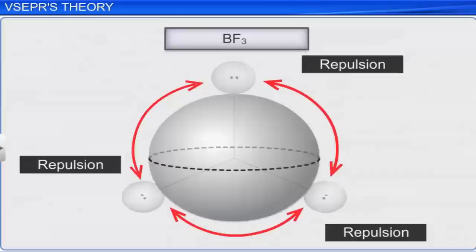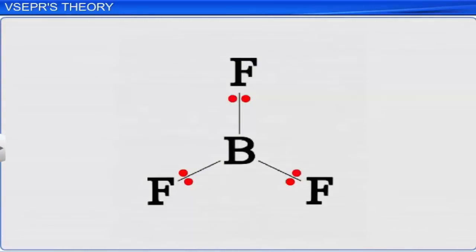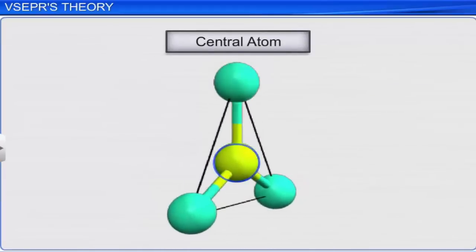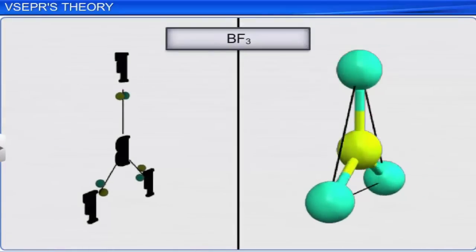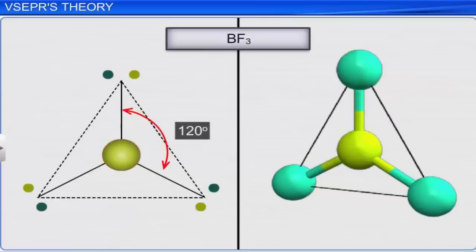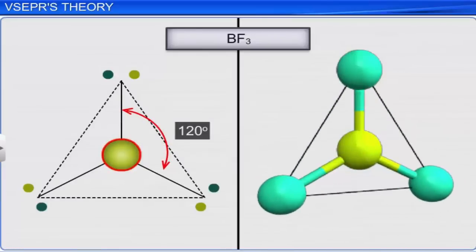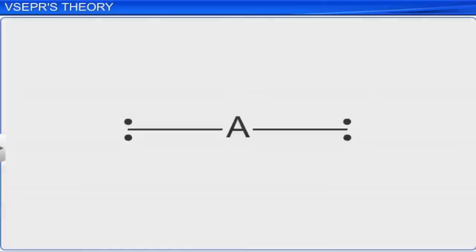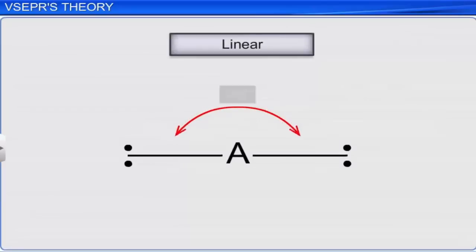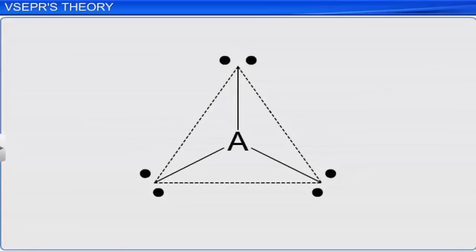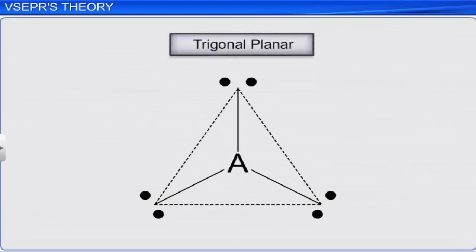The shape of a molecule depends upon the number of valence electron pairs and their arrangement around the central atom. The geometry of a molecule in which the central atom does not have a lone pair of electrons will be regular without distortion. For example, the shape of a molecule with two bonded electron pairs around the central atom will be linear with a bond angle of 180 degrees; with three bonded electron pairs it will be trigonal planar with a bond angle of 120 degrees.